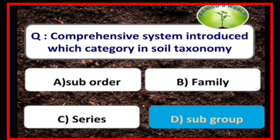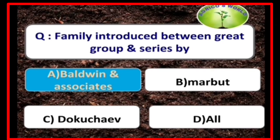The comprehensive system introduced the subgroup category in soil taxonomy. The family category was introduced between the great group and series by Baldwin and his associates.